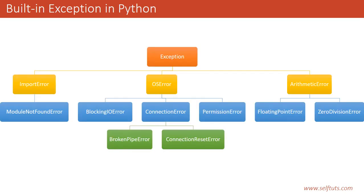Here is a simplified exception class hierarchy extracted from the full list of built-in exception classes. The Exception class is at the top — every class inherits from it directly or indirectly. Some classes that inherit directly are ImportError, OSError, and ArithmeticError. These are raised when importing a module fails, when there is an operating system-level error, or when there is an arithmetic error. For ImportError, there is a child class: ModuleNotFoundError.